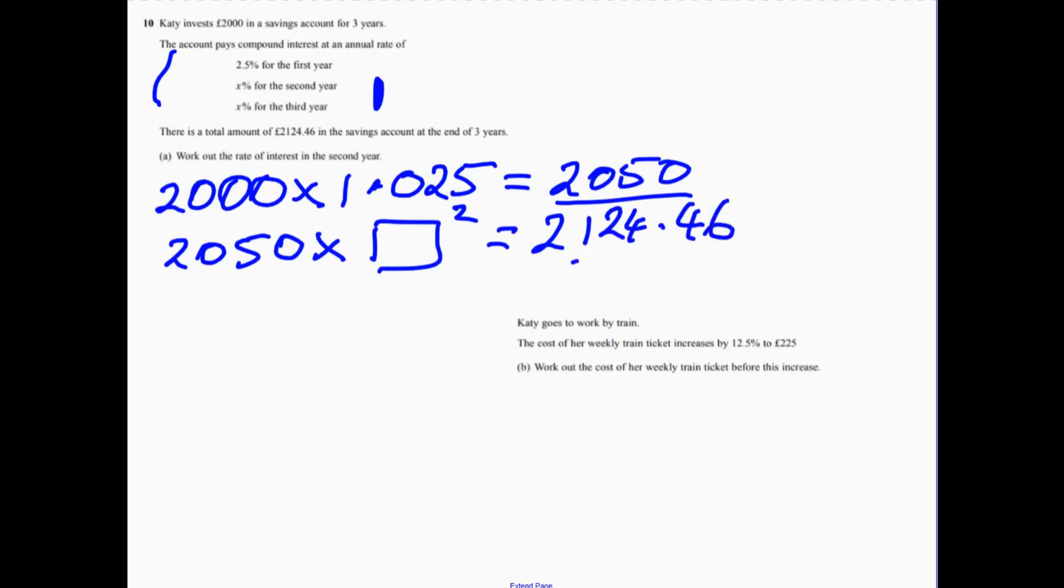If we divide this, it's going to equal the something squared. So, the something squared is going to equal... if you do that, you end up with 1.036 and a bit more.